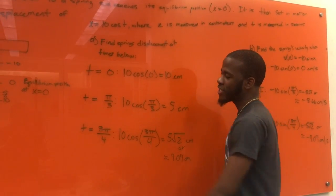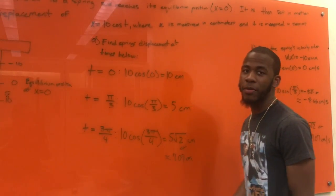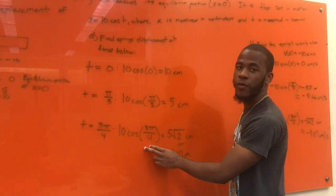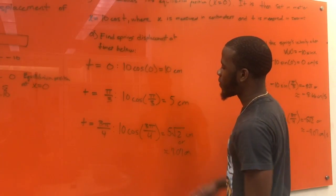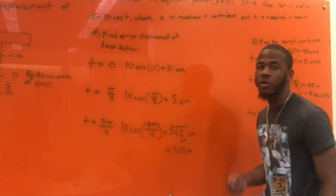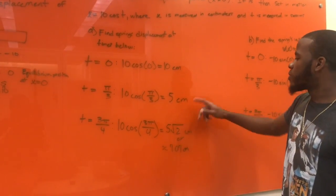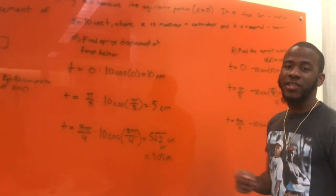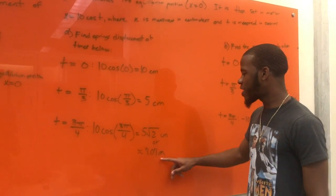Now, we're going to go ahead and do t equals three pi over four. So, at the time, it'll be three pi over four. We'll plug three pi over four into 10 cosine three pi over four. That's when we'll end up getting five square root two centimeters. But, we approximated it out to be 7.07 centimeters.